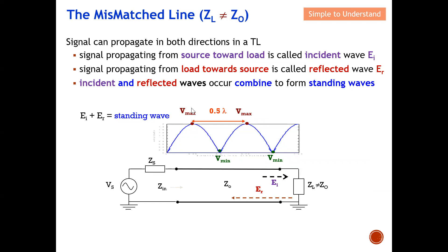A standing wave is basically a combination of the incident and reflected waves added together. Under a standing wave, we have a V-max and a V-min — the signal is not a constant number. Because the characteristic impedance of the transmission line may have variation, plus the connected load, if there is a mismatch it will create some energy reflected back, resulting in a standing wave. The voltage along the transmission line varies — it is not fixed.